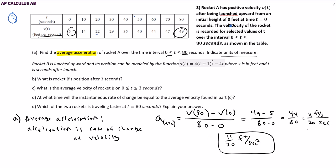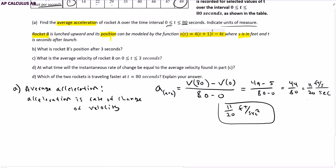Continuing, then we're given another prompt here. Rocket B is launched upward and its position can be modeled by this function where S is in feet and T is seconds after launch. So note here, this is a position function that we're given. Very important. Part B.